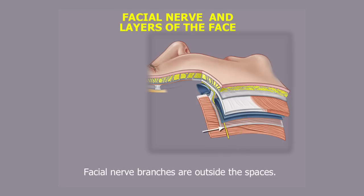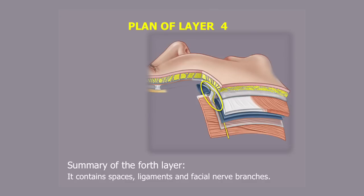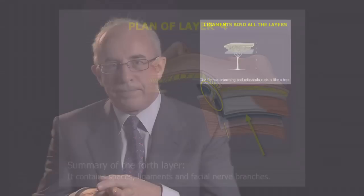The course of the facial nerve branches, which causes so much anguish to surgeons, always relates to the layers. The trunk enters the lateral face from beneath the deep fascia, and the branches remain under the deep fascia until they change levels. They always traverse level four to change level, approaching the superficial muscles at predictable locations where they are protected by the retaining ligaments. So to summarize: the surgically important fourth layer contains spaces, ligaments, and the vital facial nerve branches. I will now address each of these in turn.